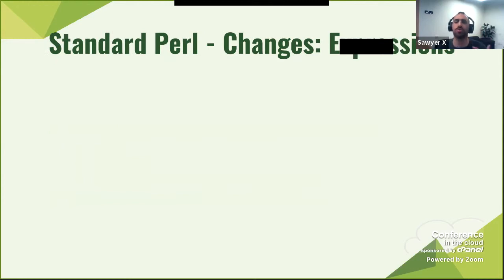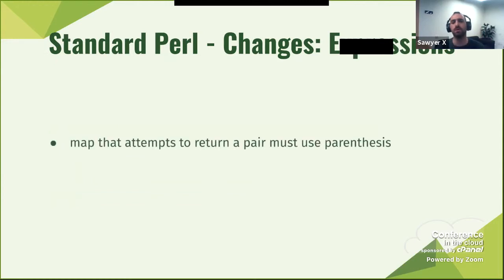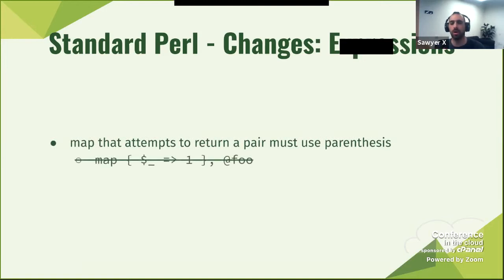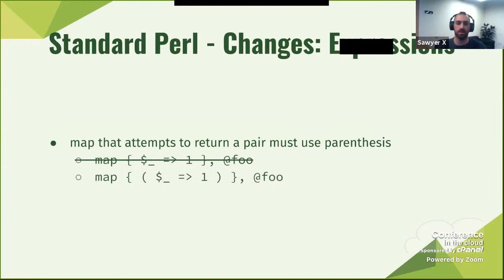One important change to expressions: a map that attempts to return a pair must use parentheses. So the short form without parentheses will not work. Instead, you use parentheses inside the map block, and then it becomes an expression. And that's great.